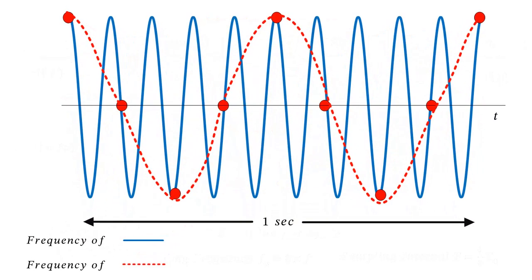When the sampling rate is low — say 4 samples in 5 cycles — it results in a sinusoid at a lower frequency and the higher frequency information is lost. The 10 Hz signal is recovered as a 2 Hz signal. This is known as aliasing.